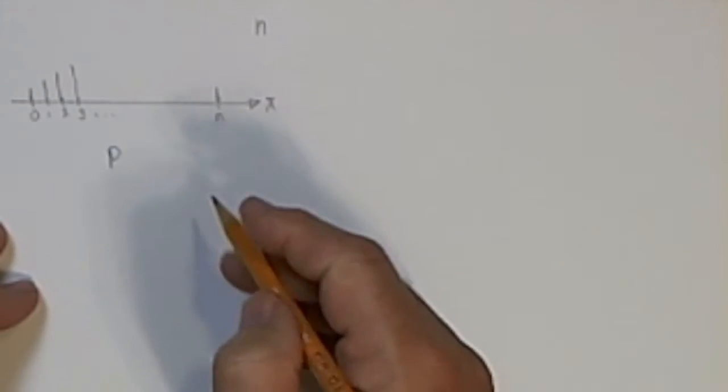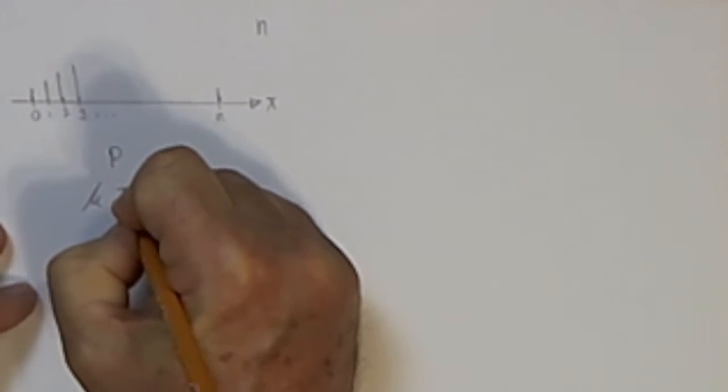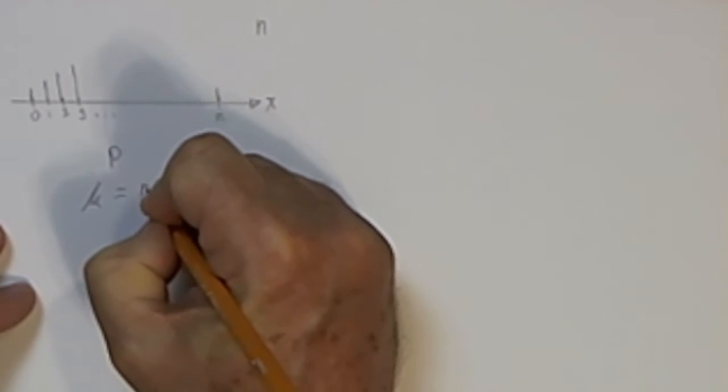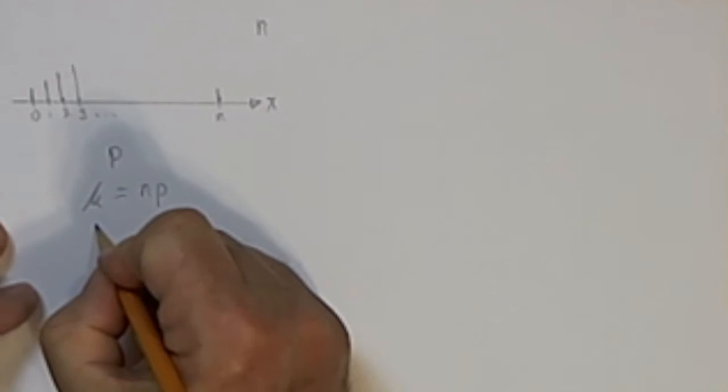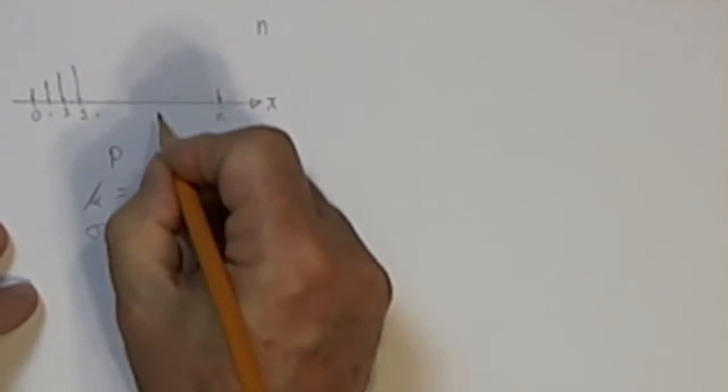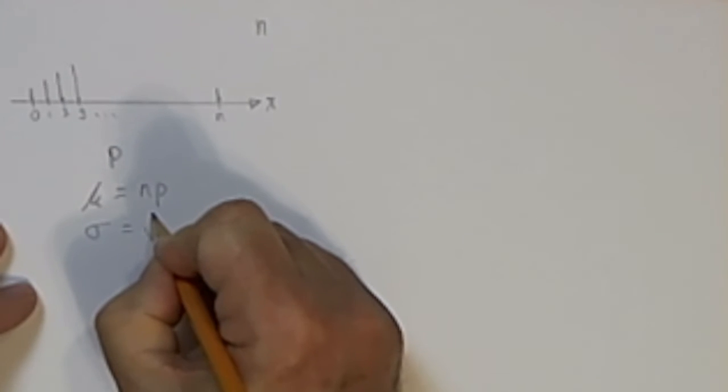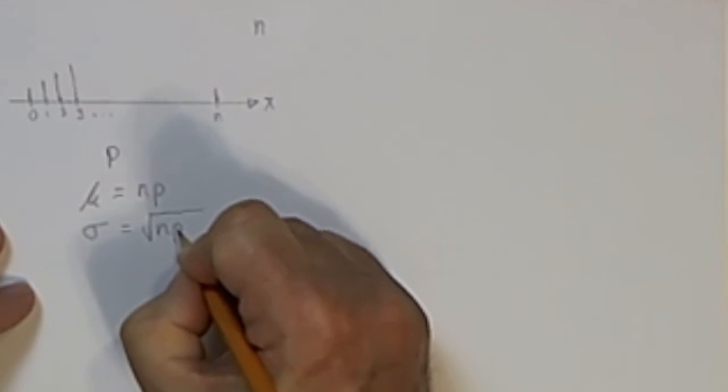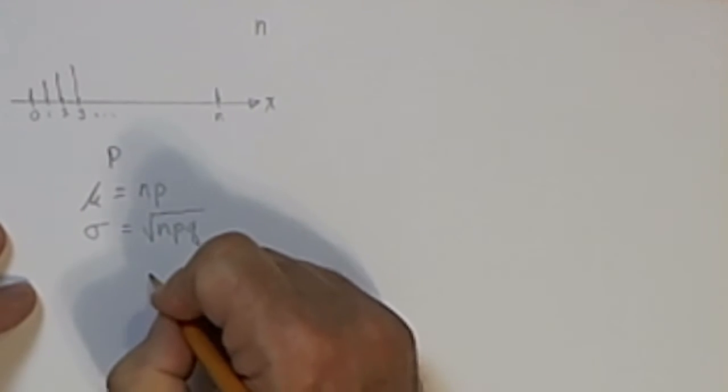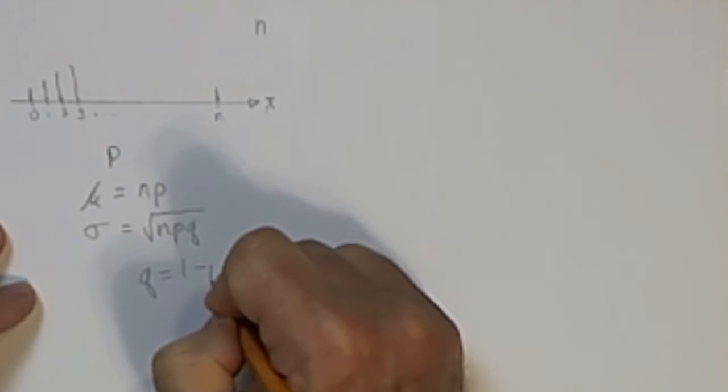The mean is n times the probability of success in an individual Bernoulli trial. This probability distribution has a standard deviation, which is the square root of n times p times q, where q is the probability of failure, or 1 minus p.